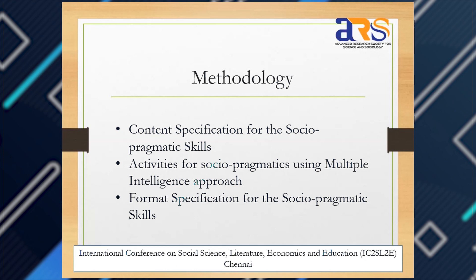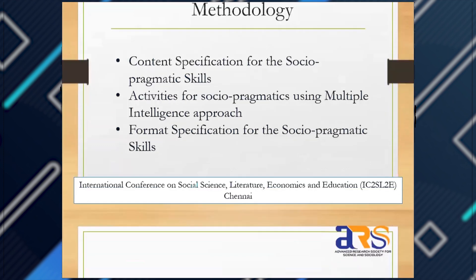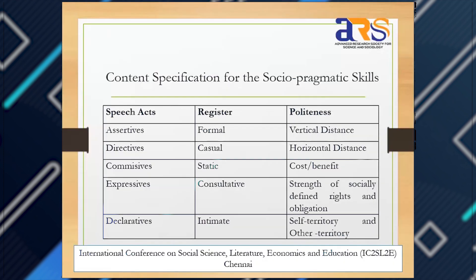For content specification, the format specification is tabulated accordingly. The content specification has macro skills: speech acts, register, and politeness. At the micro level, speech acts are divided into five: assertives, directives, commissives, expressives, and declarations. Assertives are concerned with facts — to inform — so situations related to informing, such as decision-making or role plays, would be appropriate.